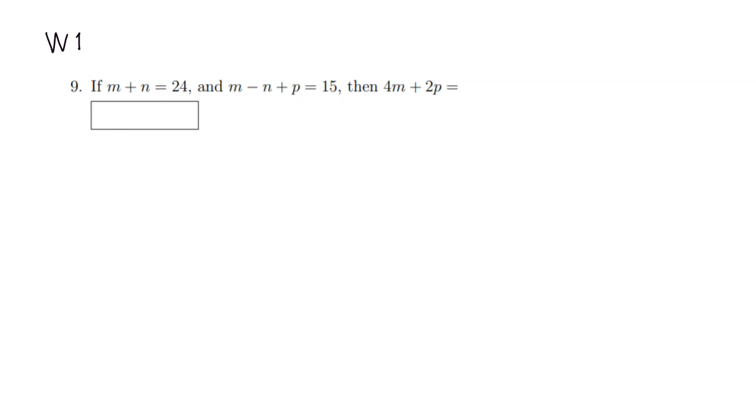All right, let's look at worksheet number one, problem number nine. So we have information about m plus n, which is 24, and m minus n plus p is equal to 15, and we have to somehow come up with the value for 4m plus 2p.